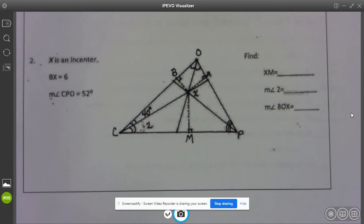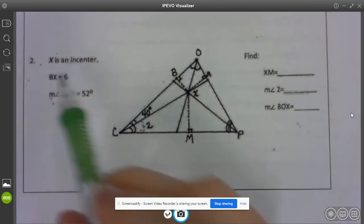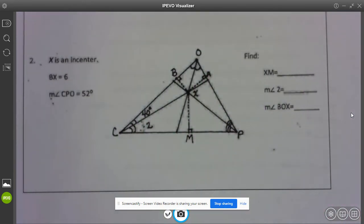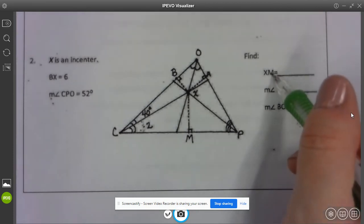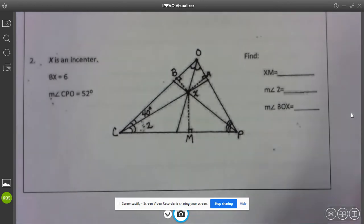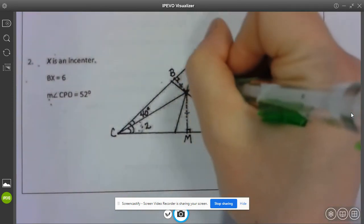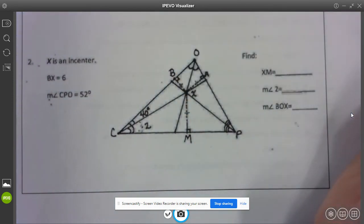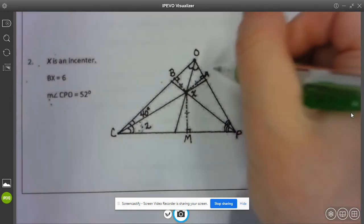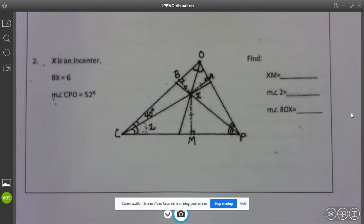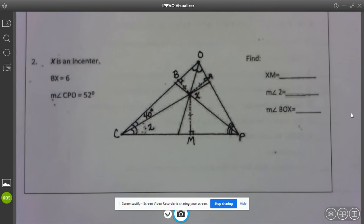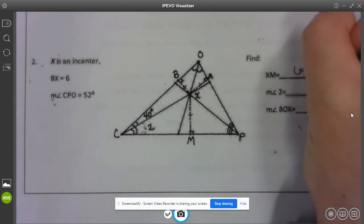So that means XM is going to be congruent to BX and XA, that looks like an A right? I don't have my glasses on. So XM, BX and XA are all 6.